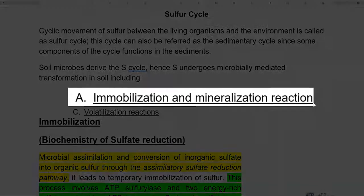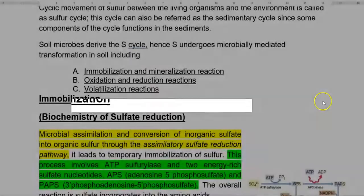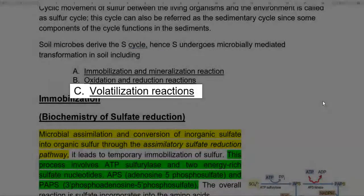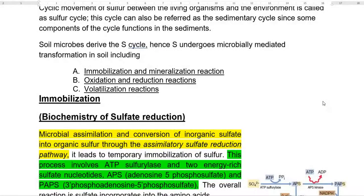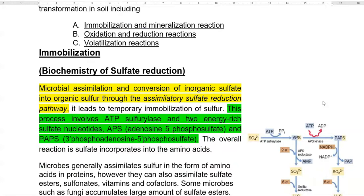The sulfur transformations involved the following steps: immobilization and mineralization reactions, oxidation and reduction reactions, and volatilization reactions. Here, immobilization is a point of concern with reference to our subject, since immobilization refers to the assimilation of sulfur inside the cell.